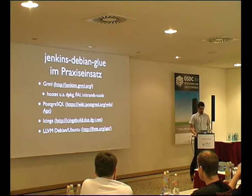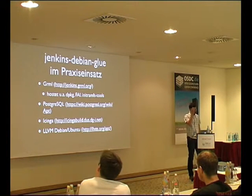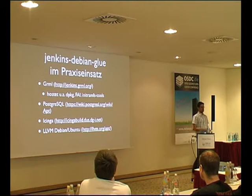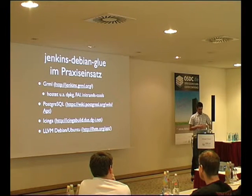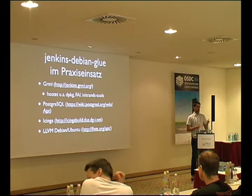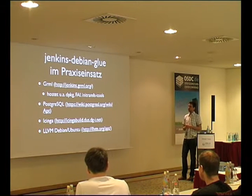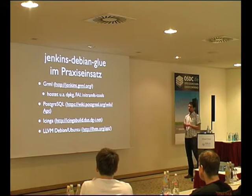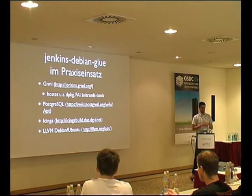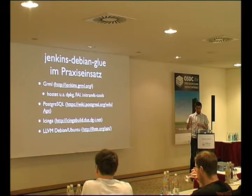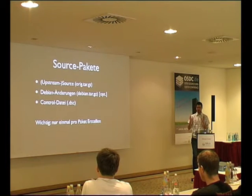Jenkins Debian Glue ist im Praxiseinsatz unter anderem im Grml-Projekt. Ich bin im Grml-Projekt aktiv und wir bauen dort nicht nur Debian-Pakete, sondern auch unsere ISOs. In Jenkins kommen unsere Daily-ISOs raus – für alle Flavors, die wir für Grml haben, gibt es jeden Tag ISOs, und wir machen auch die offiziellen Releases daraus. Mittlerweile verwendet auch das Postgres-Projekt Jenkins Debian Glue, Icinga hat es im Einsatz, und vor kurzem gab es einen Blogpost auf Debian Planet vom Betreiber der LLVM Upstream Debian/Ubuntu-Pakete. Wir wollen uns kurz anschauen, wie Jenkins Debian Glue funktioniert.